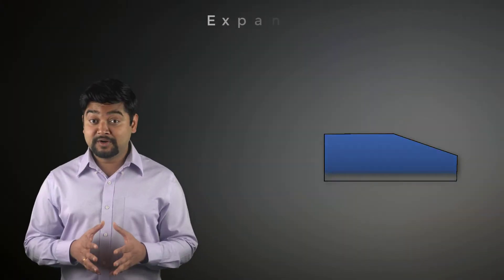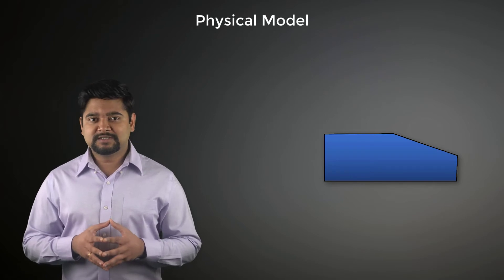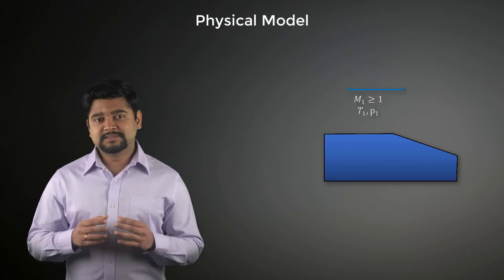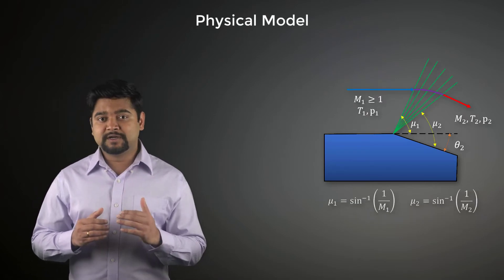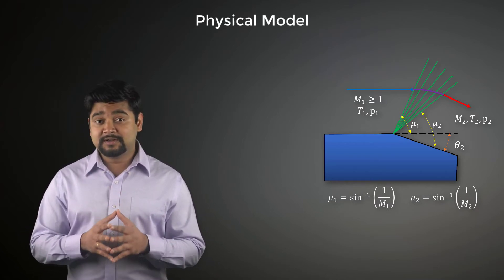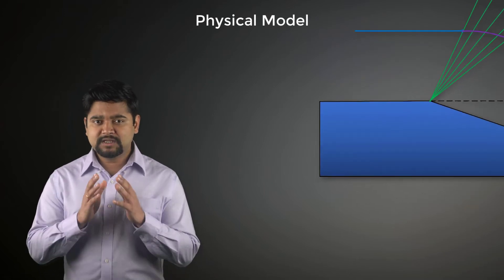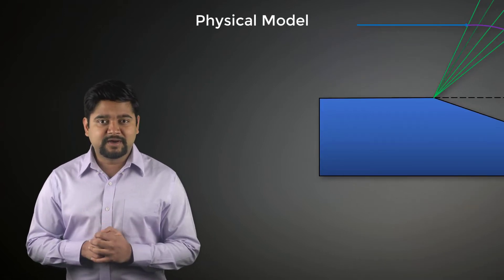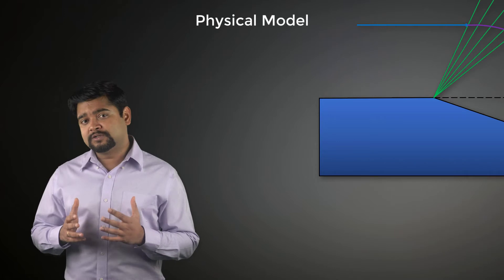For an abrupt corner, as shown here, a group of expansion Mach waves is formed such that the flow turns and becomes parallel to the downstream wall. Expansion waves are often called expansion fans. Each line in the expansion fan represents a line of constant properties.